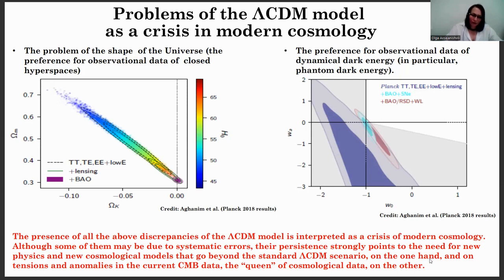The presence of all the above discrepancies of the lambda CDM model is interpreted as a crisis of model cosmology. Although some of them may be due to systematic errors, their persistence strongly points to the need for new physics and new cosmological models that go beyond the standard lambda CDM scenario on the one hand, and address tensions and anomalies in the current CMB data — the queen of cosmological data — on the other.